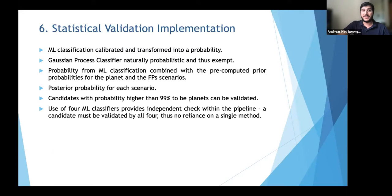For statistical validation, the machine learning classification is calibrated and transformed into a probability — except for the Gaussian process classifier which is naturally probabilistic. This probability is combined with pre-calculated prior probabilities to compute the posterior probability for each scenario. Candidates with probability higher than 99% to be planets can be validated. Using four independent classifiers introduces an independent check, requiring each candidate to be validated by all four methods, which also effectively reduces bias from overfitting in any single model.